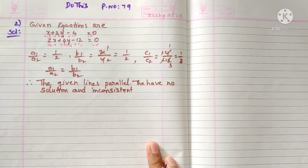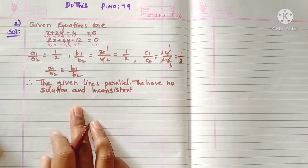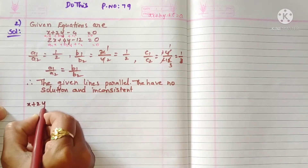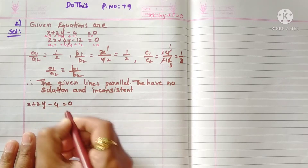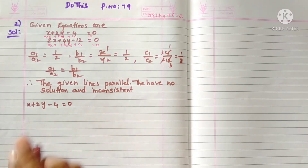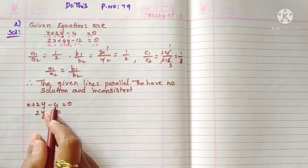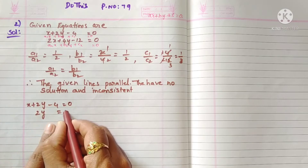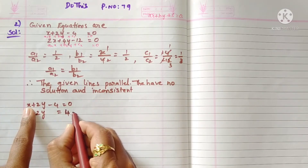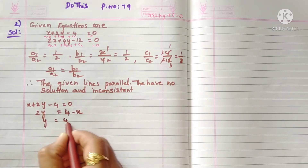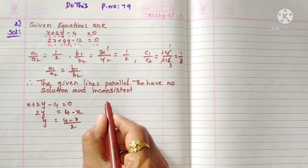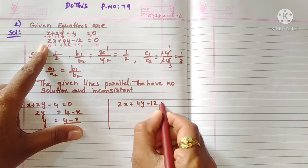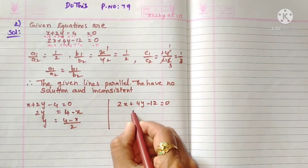Now we want to draw the graph, as they are asking graphically. Take the first line: x plus 2y minus 4 is equal to zero. Find the y value: 2y equals negative x plus 4, transposing, so y equals four minus x by two. Similarly for the second equation: 2x plus 4y minus 12 is equal to zero, so 4y equals 12 minus 2x.